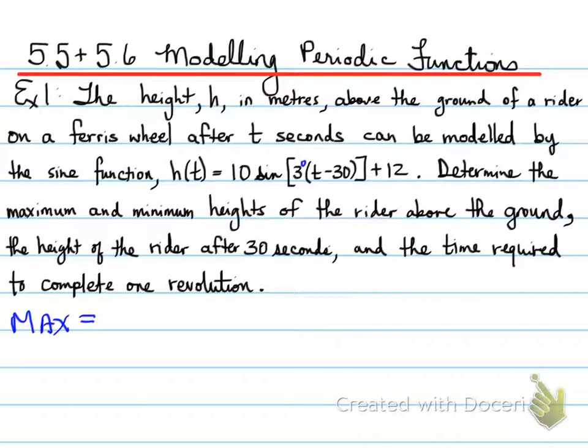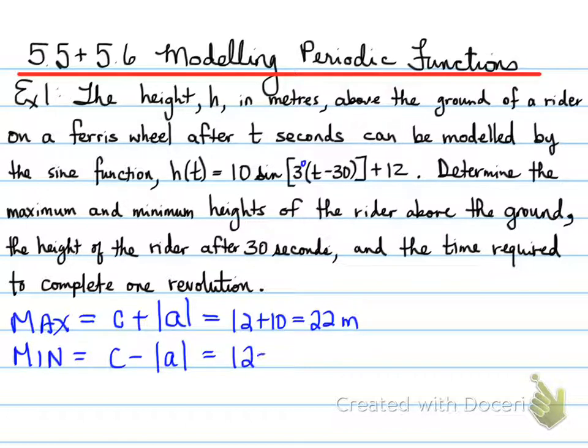The maximum can be determined by taking the c value and adding the absolute value of a. So in this case our a is positive, so 12 plus 10 is 22 meters high, and the minimum is c minus the absolute of a, which is 2 meters. So we've covered the maximum minimum.